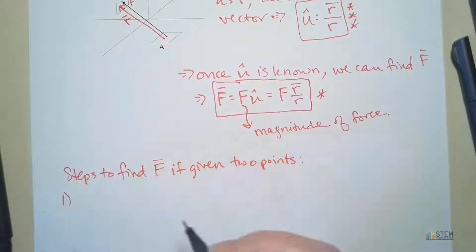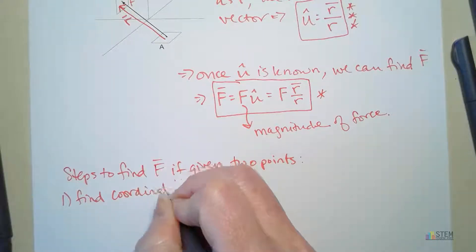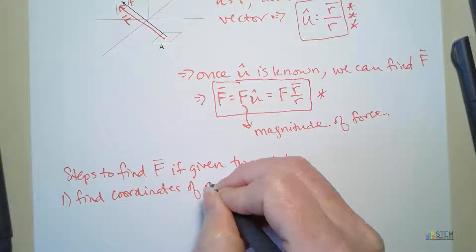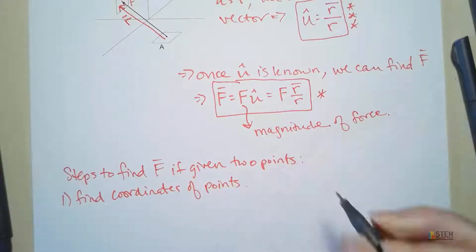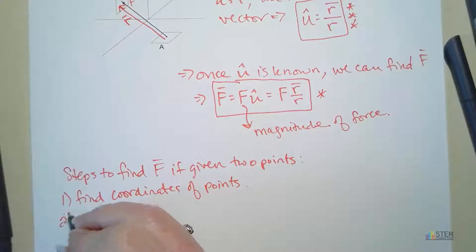What we need to do, you need to find the coordinates of these points. So in this case, we would need to find the coordinates of A and then B.